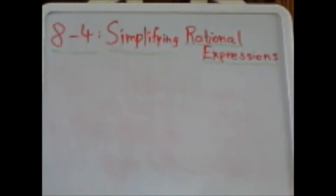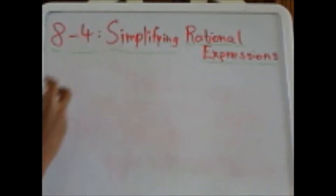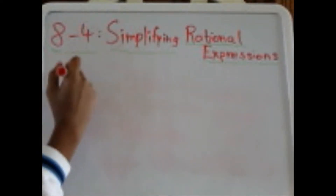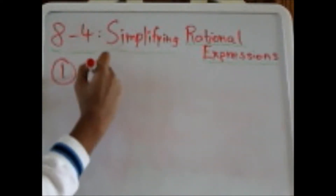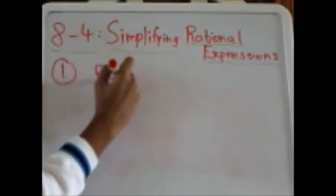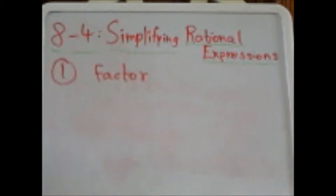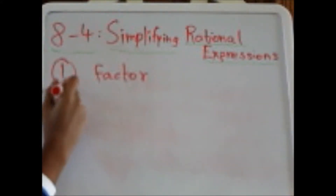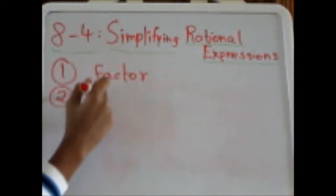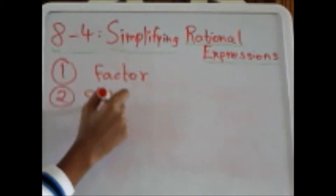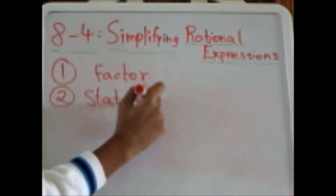Today we're going to be learning about Section 8-4: Simplifying Rational Expressions. In order to simplify any rational expression, we need to follow four steps. The first step is to factor out anything that can be factored from the numerator and the denominator. The second step is to state all the restrictions that make the value of the denominator zero.